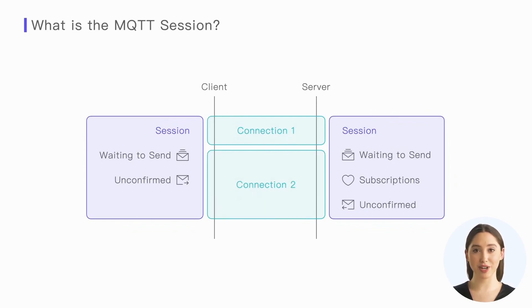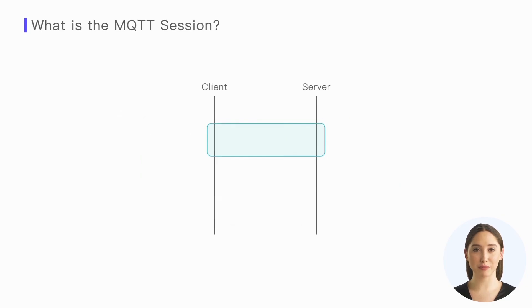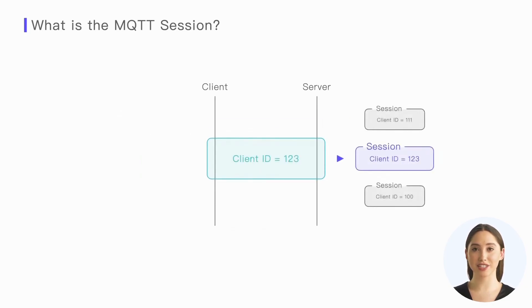The session has its own life cycle. We can make it span multiple network connections — we usually refer to such sessions as persistent sessions. We can also make the session last only as long as the network connection, which means the session state will be discarded when the network connection is disconnected, so the next time we connect, we have to create a brand new session. To ensure both parties can resume communication from the correct session state, the server and client need to associate the session state with a unique identifier called the client ID.